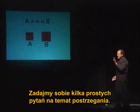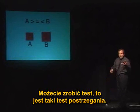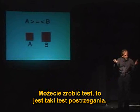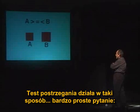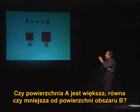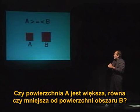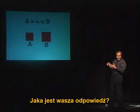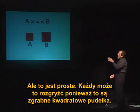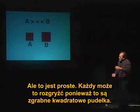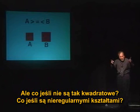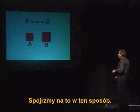Let's ask some simple questions about perceptions — you can take a perception test right here. Very simple question: is the surface area of A greater than, equal to, or less than the surface area of B? The answer is less — and that's easy because they're nice little square boxes. But what if they're not so square? What if they're irregular shapes?